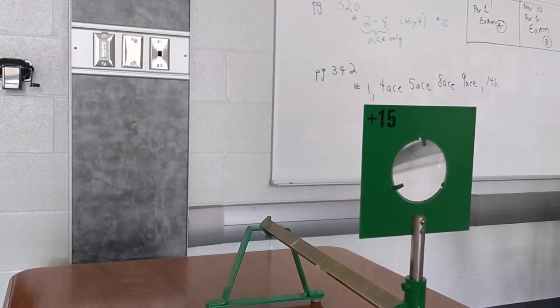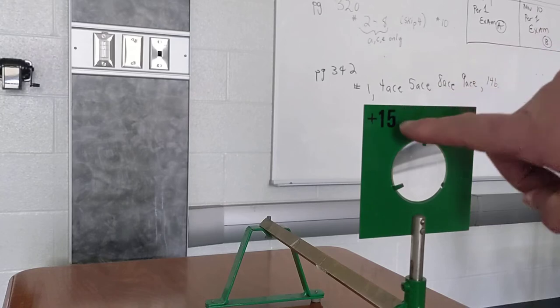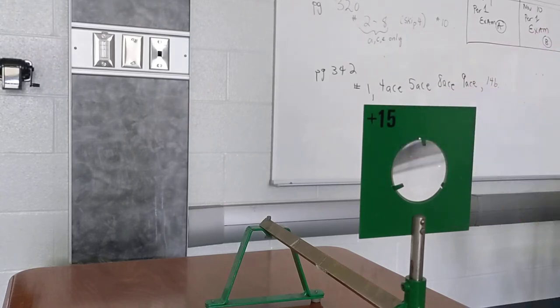I have my converging lens here. It's already labeled as a focal length of plus 15, but we can use our ruler to figure out if that is accurate.